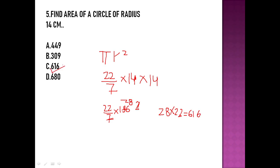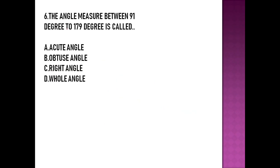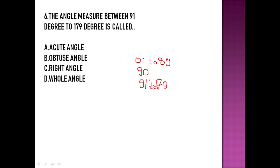The sixth question asks about the angle measure between 91 degrees and 139 degrees. From 0 degrees to 89 degrees is known as an acute angle. 90 degrees is a right angle. From 91 degrees to 179 degrees is known as an obtuse angle. So option B, obtuse angle, is the right answer.